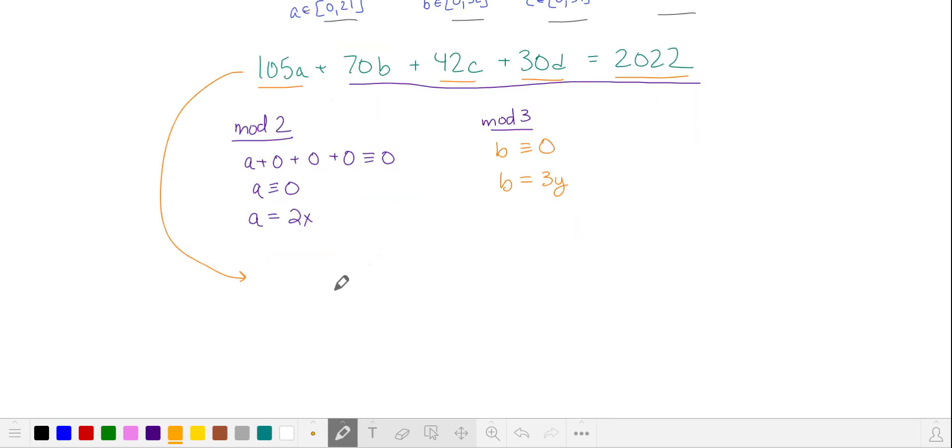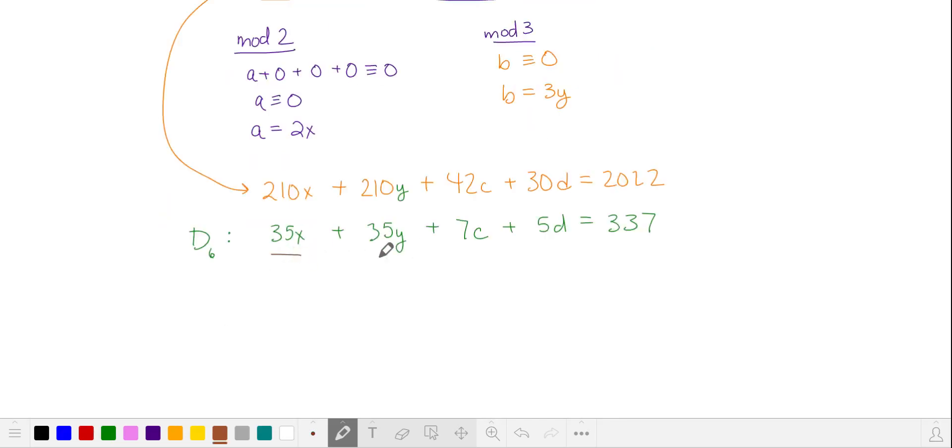We'll substitute into our other equation, and then we'll divide by 6. We have some multiples of 5 here in this equation. So let's take this equation mod 5.